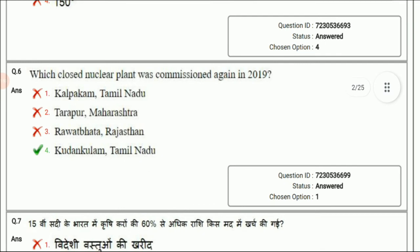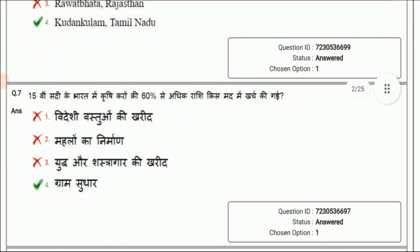Next question is from GK. This year the questions will be asked from current affairs, but this will give you an idea how questions can be framed from current affairs. The question is: Which closed nuclear plant was commissioned again in 2019? The exam was held in 2019, so it was asked from that time's current affairs. The answer is Kunda Kulam, Tamil Nadu. Next question: In 15th century, 60% of agricultural tax was spent for? The answer is village development.